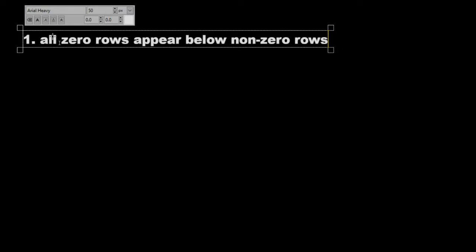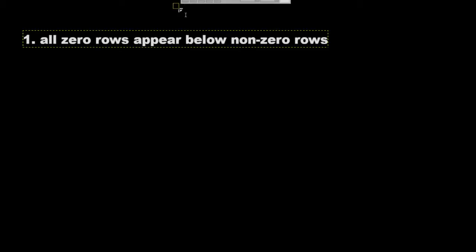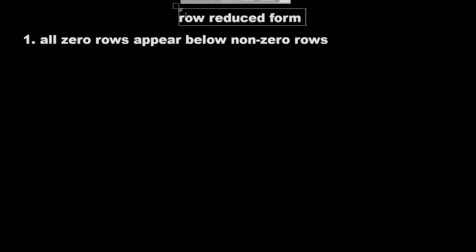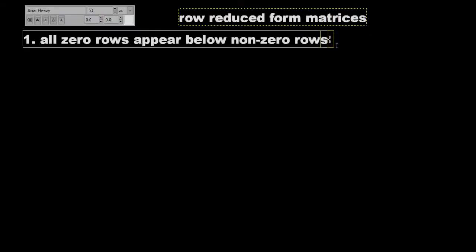So basically what that means is if there are any zero rows in the matrix, in a row reduced form matrix, they will be at the bottom.